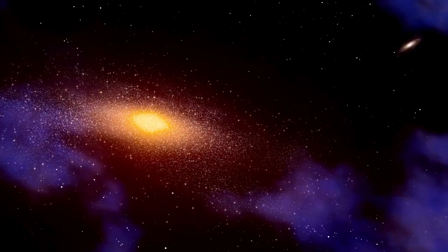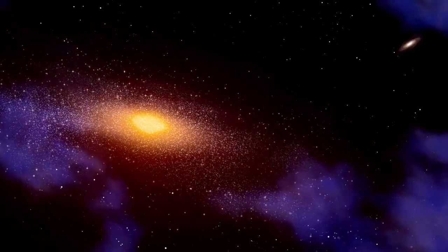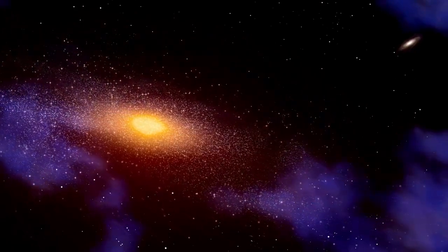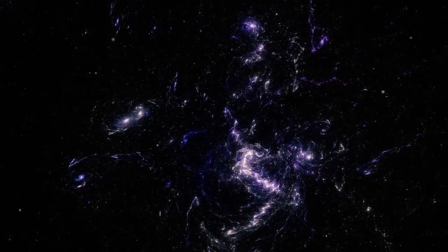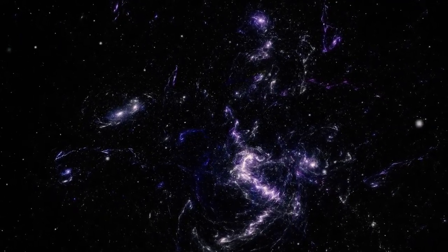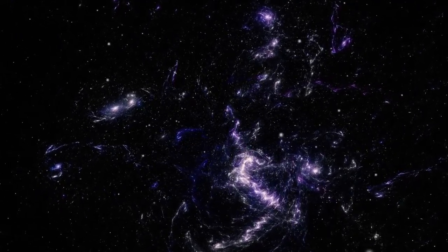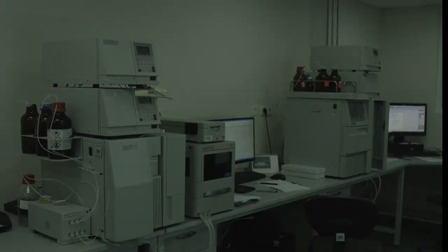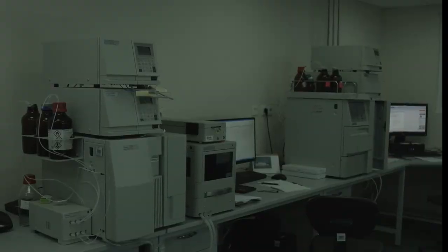For decades, scientists believed they had a clear picture of how the universe evolved. First came the Big Bang, then a Dark Age. Slowly stars began to form, then galaxies and eventually life. The further back in time we look, the simpler things should appear, just faint hydrogen clouds and scattered particles. That's what everyone expected Webb to find when it gazed at a supposedly quiet, empty stretch of sky.